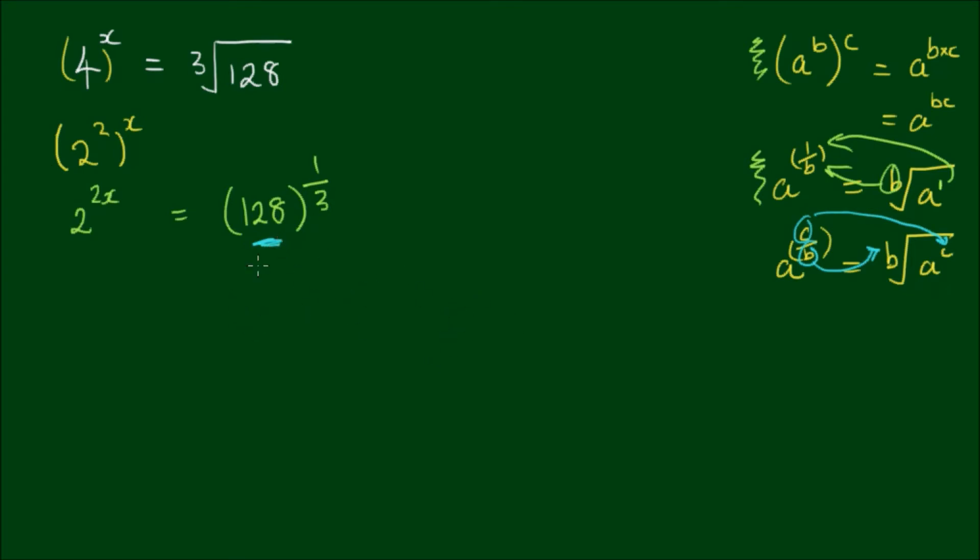Let's use a bit of trial and error here, which there's nothing wrong with doing things by trial and error. So 128. What are the factors of 128? So we have... if we divide 128 by 4, we have 4 times 32. So 4 times 32 is 128.